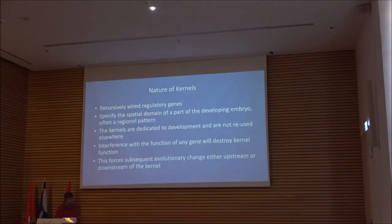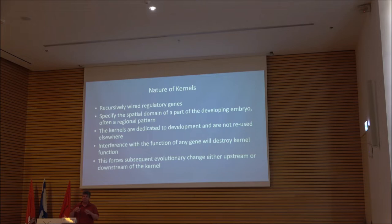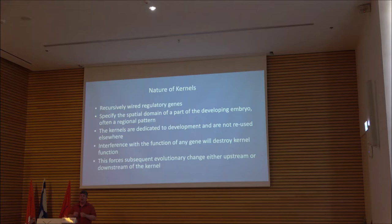If they're recursively wired in this fashion, they're going to be resistant to further modification, suggesting that evolutionary change will come upstream and downstream of the kernel. Much like the phylotypic stage that we heard about in the first talk yesterday from Nancy Bull. Rather than dealing with the conservation of an entire body type, this kernel structure purportedly advances the conservation of a component of the body type.